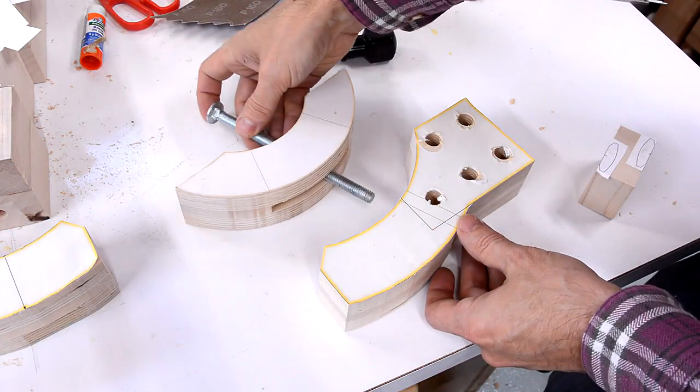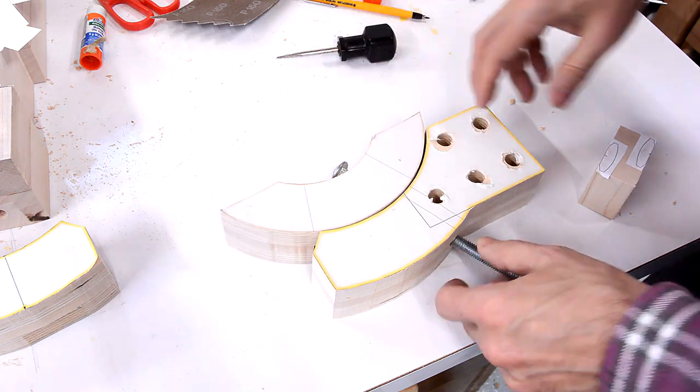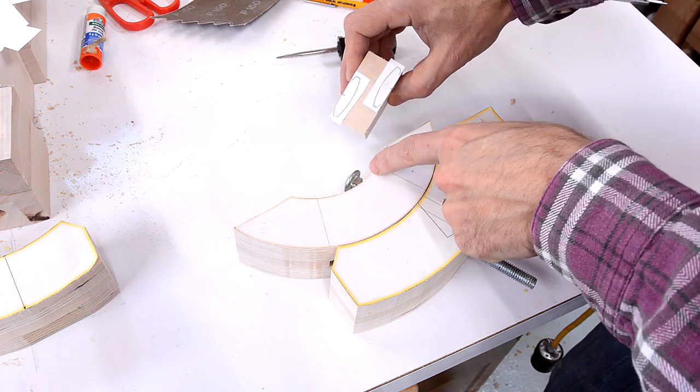The trunnions are gonna be held on with a bolt that goes through both parts. And for right here, I'm gonna cut it apart using the templates for my plans that fits right in that curve.